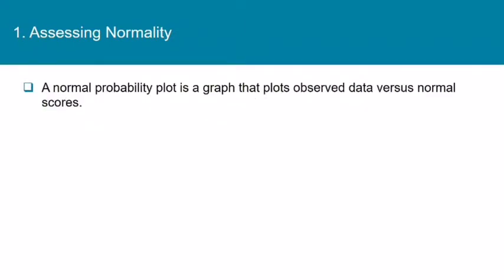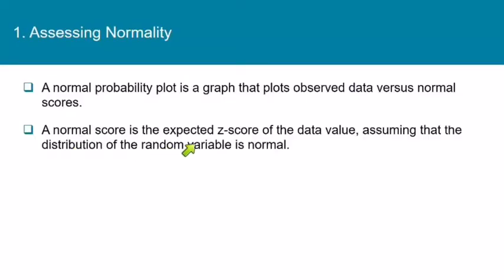What we will use to help us determine if a sample comes from a normally distributed population is called a normal probability plot. This is a graph that plots the observed data values versus the normal scores. A normal score is the expected z-score of a data value, assuming that the distribution of the random variable is normal.